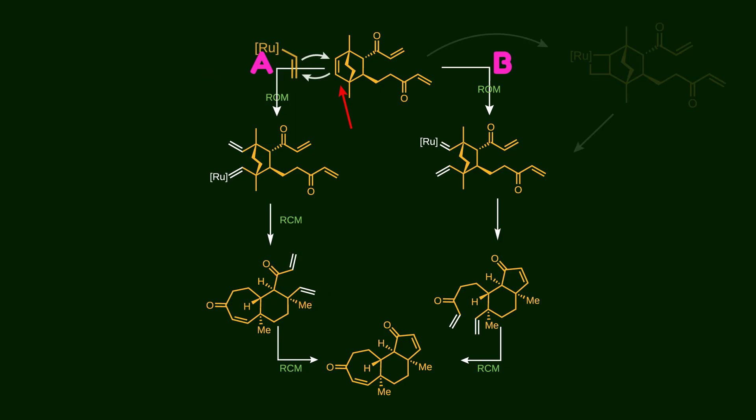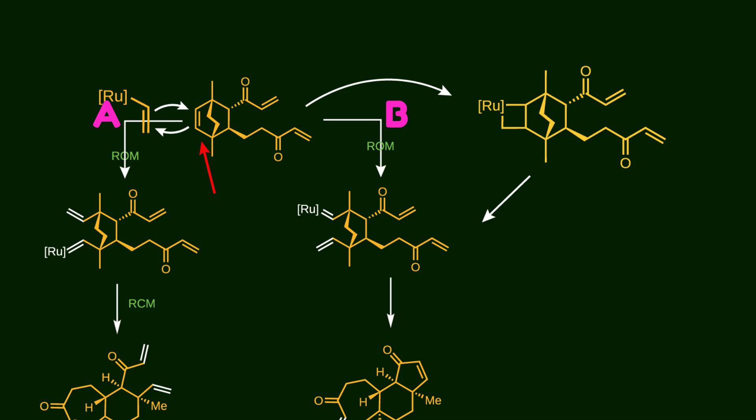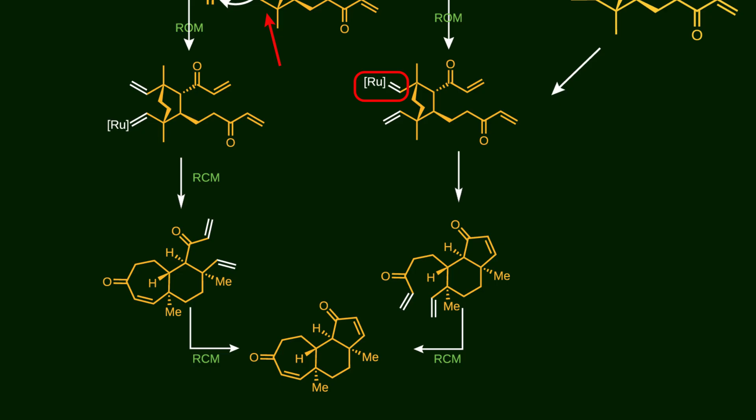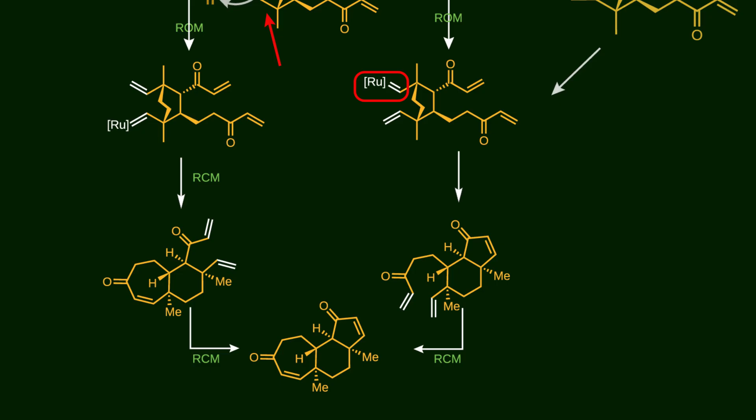Now let's consider Path B. The difference lies in the first step. Here ruthenium binds to a different double bond. As a result, the five-membered ring is formed before the seven-membered ring. Then, the second ring-closing metathesis step completes the formation of the seven-membered ring. However, the final product remains the same in either pathway.